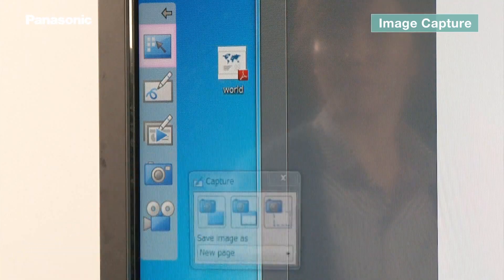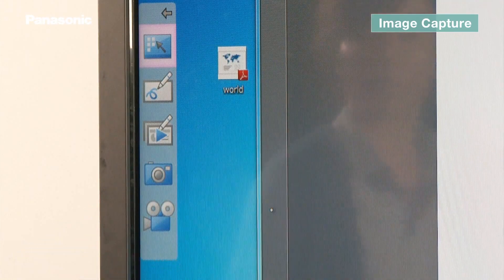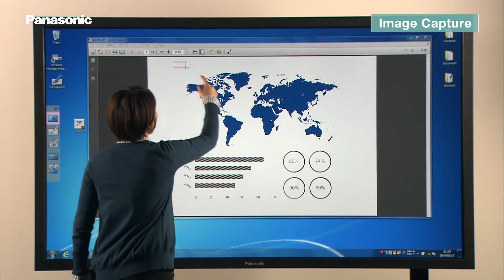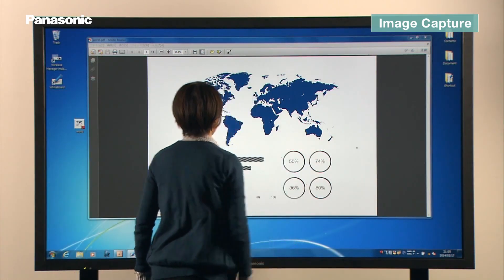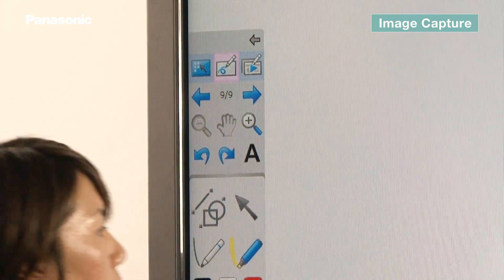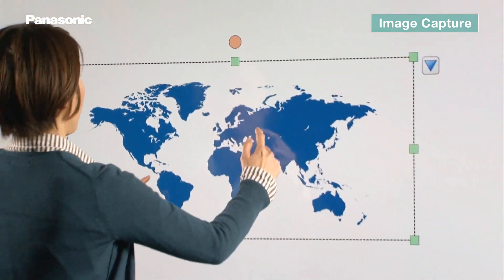In desktop mode, you're able to take a snapshot of a selected area using the capture function. You can load the captured image to the whiteboard or save as an image file.